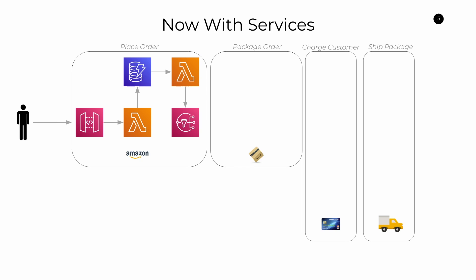We're done with the placing of the order. Then we have a second suite of services responsible for packaging that order. We have another Lambda function invoked by that SNS topic. We take advantage of the IoT service to broadcast a message out to a warehouse worker instructed to pick and pack a package. Once that's complete, we broadcast a message out to an SNS topic so that we can proceed to the next step. Packaging of the order is now complete.